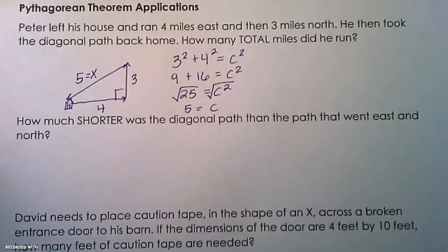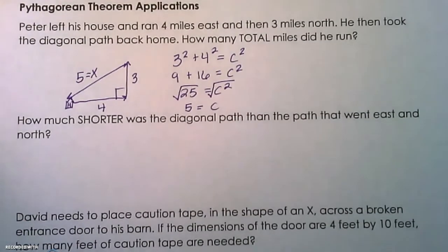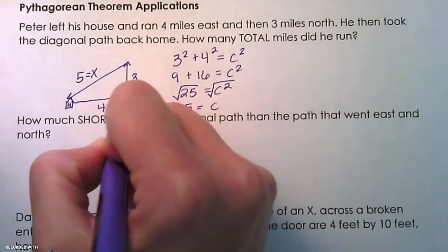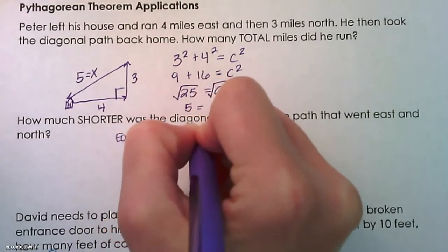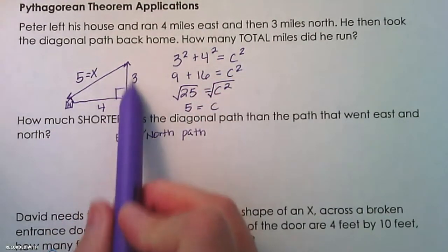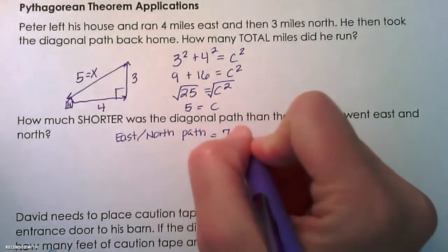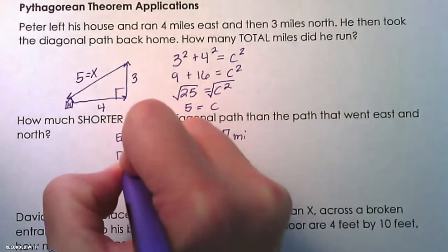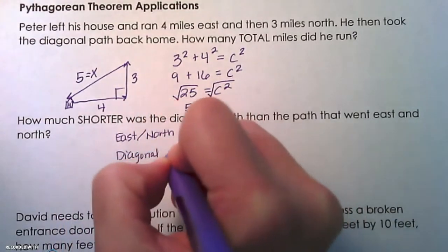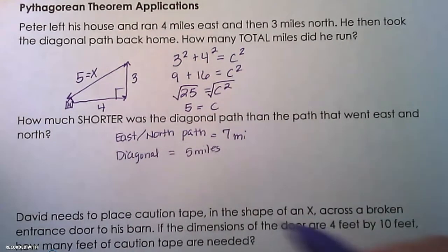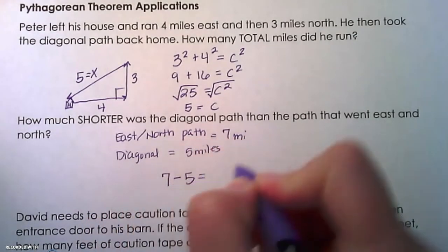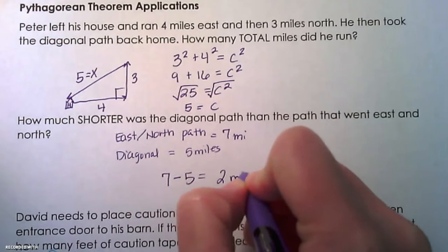There's a second part of this question: how much shorter was the diagonal path than the path that went east and north? The east-north path was four plus three, so that was seven miles. The diagonal path was five miles. We're trying to find the difference between those two distances, so we do seven minus five, which is two miles shorter.